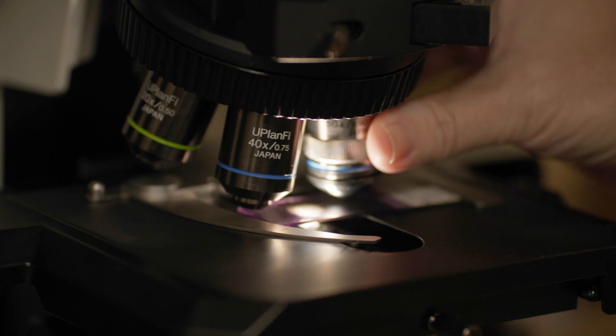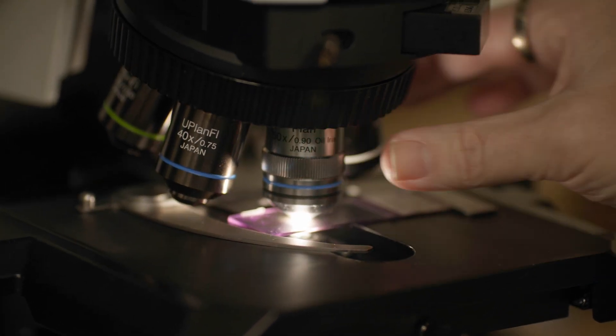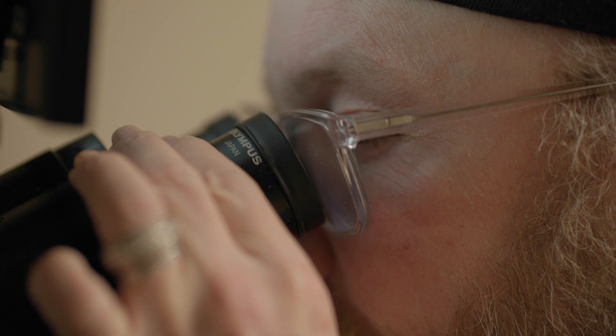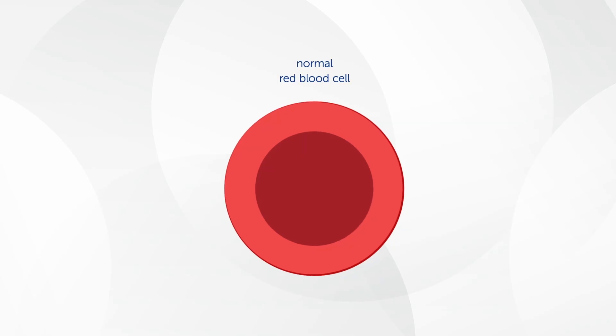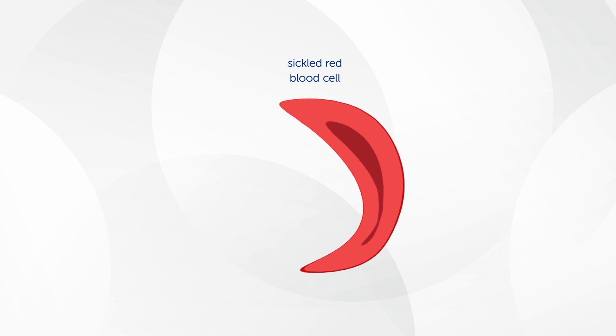Sickle cell disease is a genetic disease in which the normal hemoglobin in the red blood cell — the function of which is to carry oxygen — has a protein mutation that makes the red cell turn into a sickle shape, and when that happens, it causes the oxygen not to be delivered to vital organs.